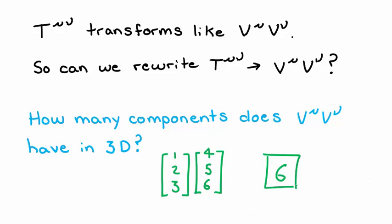Well, v mu and v nu in three dimensions are both three component vectors. So v mu v nu can have up to six components. So it doesn't really seem like these two are very compatible.